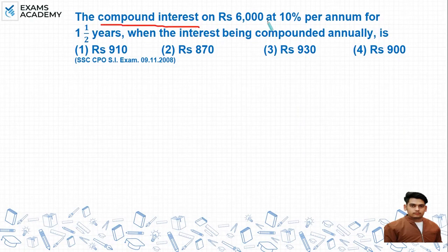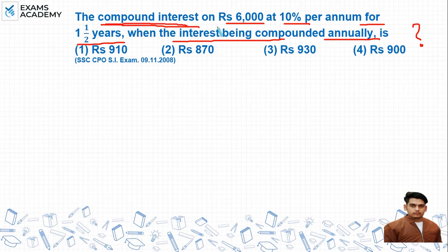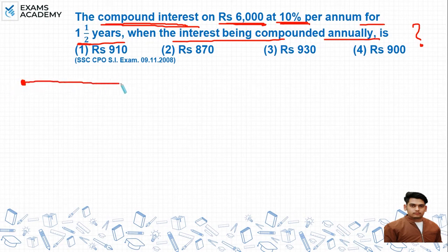The question is: find the compound interest on rupees 6000 at 10% per annum for one and a half years, when interest is compounded annually. So we have to find compound interest on 6000 rupees at 10% per annum rate of interest, and time is one and a half year. Let's solve the question.